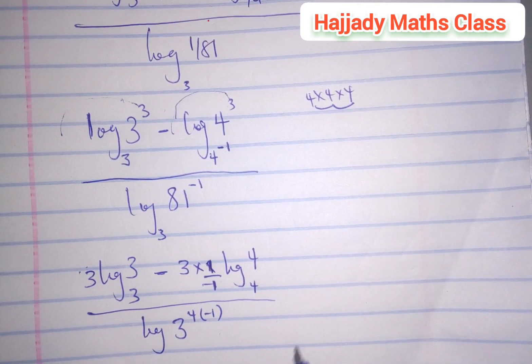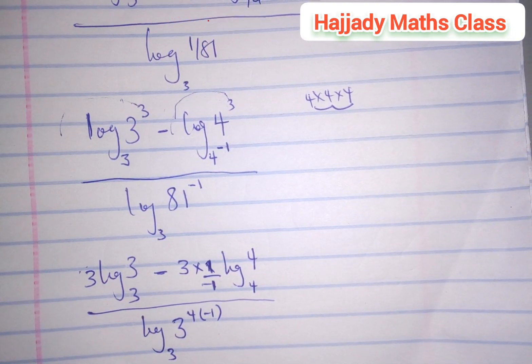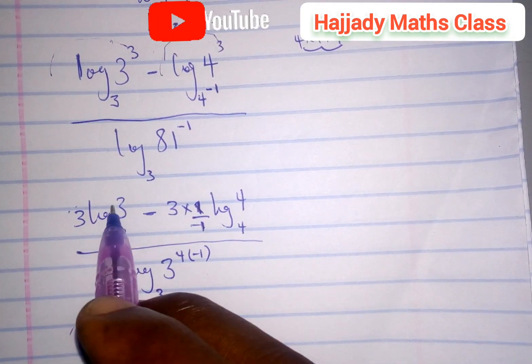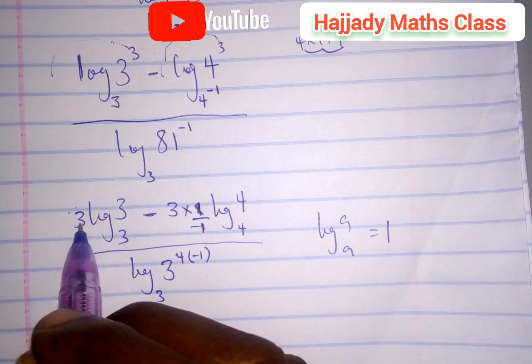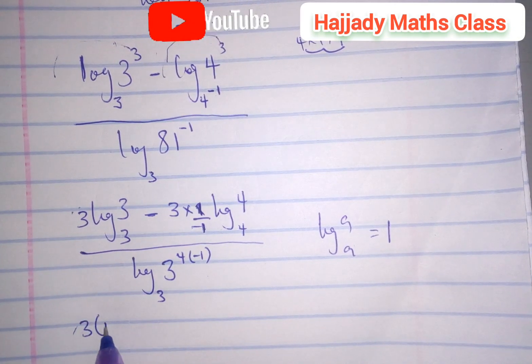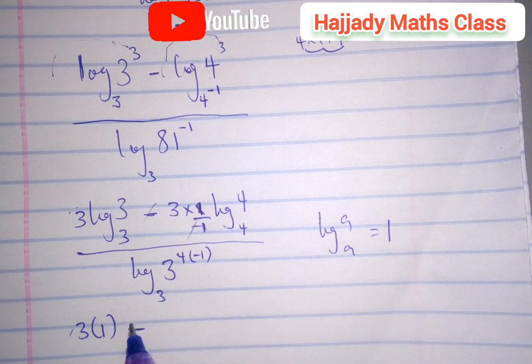From the basic rule of logarithms, log a base a is equivalent to 1. So this means we have 3 into bracket 1, minus minus, cancel out minus is going to be plus 3.